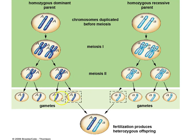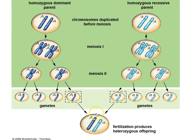Then meiosis II occurs and we have created the gametes — here are all the sperm, here are all the eggs. If the parent only had recessive alleles, every single gamete it produces will have recessive alleles. If the parent only has dominant alleles, every gamete it makes will only carry the dominant trait. Now with fertilization, any combination will give us the same outcome: 100% heterozygous.